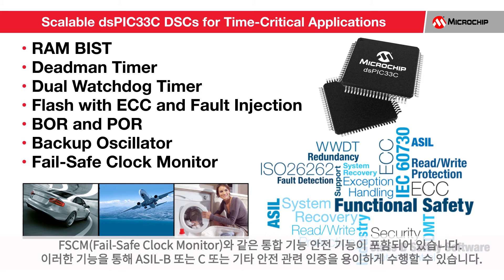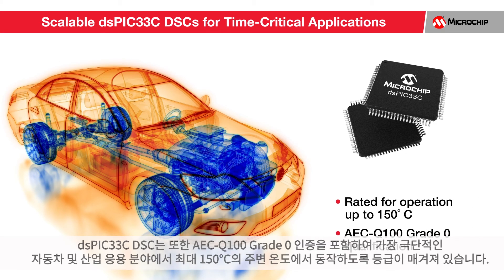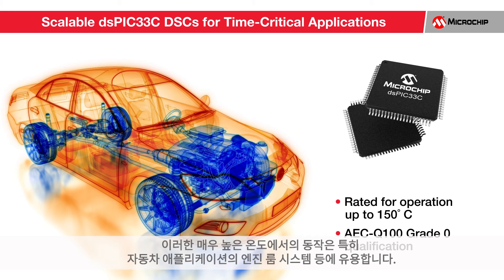These features ease ASIL-B or ASIL-C or other safety relevant certifications. Some target applications require operation in extreme environmental conditions. The dsPIC33C devices are also rated for operation up to 150 degrees Celsius for the most extreme automotive and industrial applications, including AEC Q100 grade zero qualification. This very high temperature operation is particularly helpful for under-the-hood systems and automotive applications.